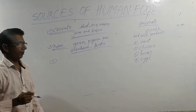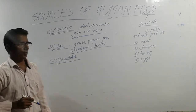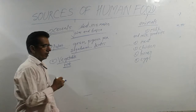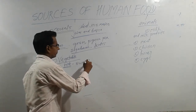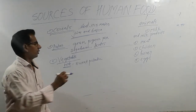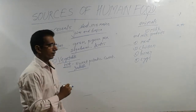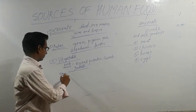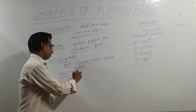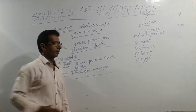The third source from plants is vegetables. We eat different parts of vegetables. As roots, we eat sweet potato, carrot, and radish. As stem, we eat potato, sweet potato, onion, and ginger.